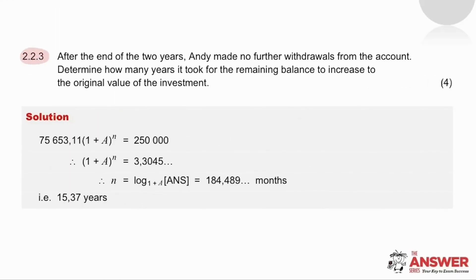This third part question is asking how long it will take for our answer in 2.2.2, the 75,653 rand and 11 cents to grow to the original value of the inheritance. In other words, we are being asked to solve for N in the compound increase formula. You'll see here that it is necessary to use logs in order to solve for N. Again, reading your question carefully is crucial to know what units you are working in and what units your answer needs to be in. Because the interest on the account is compounded monthly, N is going to be the number of months. And so in order to give our answer in years, you will need to convert. The answer here is telling us that it will take just over 15 years for the remaining balance to increase to the value of the investment.